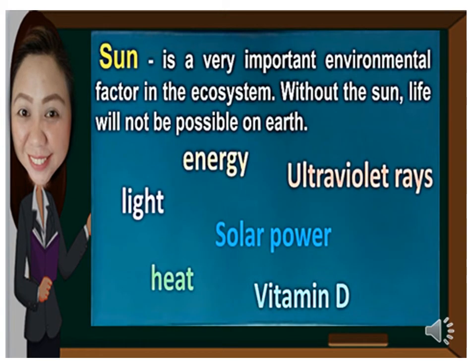The sun is a very important environmental factor in the ecosystem. Without the sun, life will not be possible on Earth. Remember that the sun gives us energy, light, solar power, heat, vitamin D, and even ultraviolet rays.